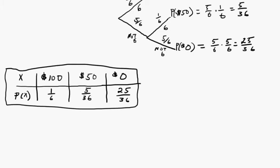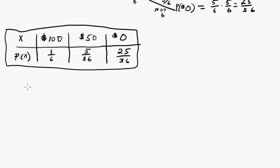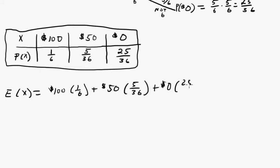So now the expected value of playing a game is $100 times 1/6 plus $50 times 5 divided by 36 plus $0 times 25 over 36. And that comes out to be $23.61.